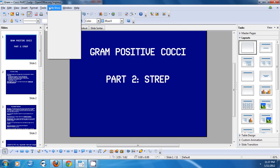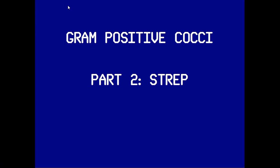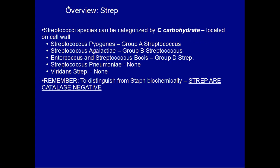Now I'm going to get down to the second part of the lecture on gram-positive cocci, and this part we're only going to be going over the streptococcus. First we're going to go over the overview. Streptococcal species have a name but they can also be categorized by the C carbohydrate, also called the Lancefield group, which is located on their cell wall. Step one will require you to know both of these, so we're going to go down the list.